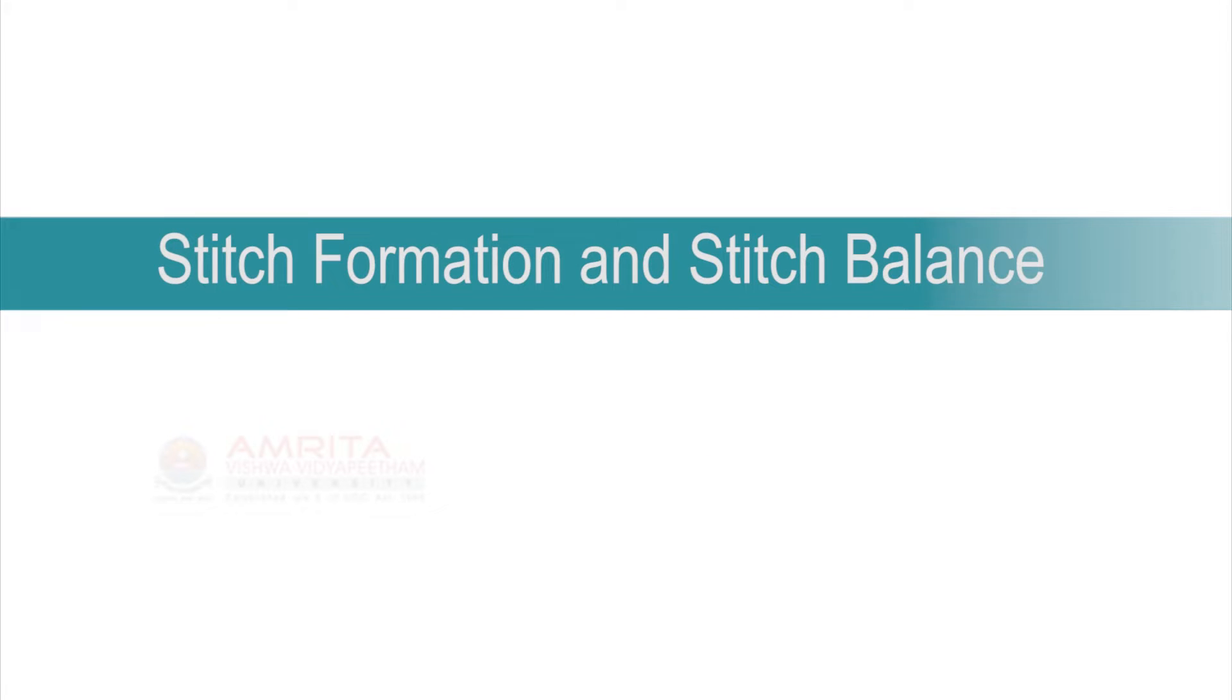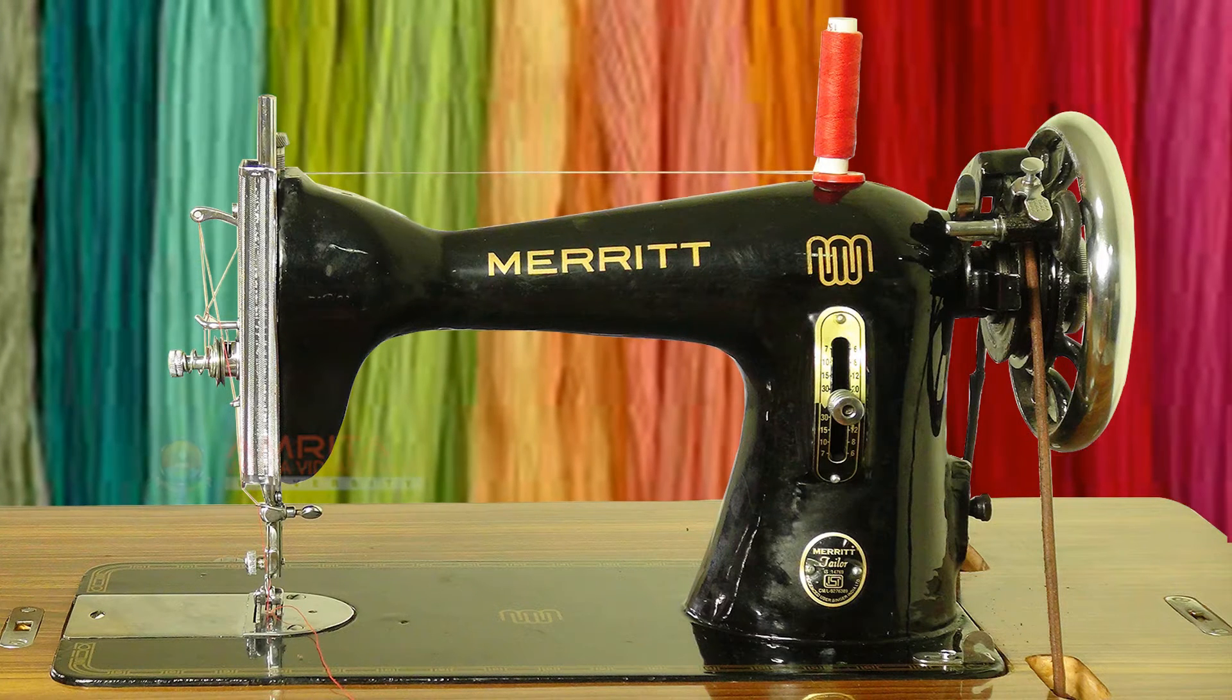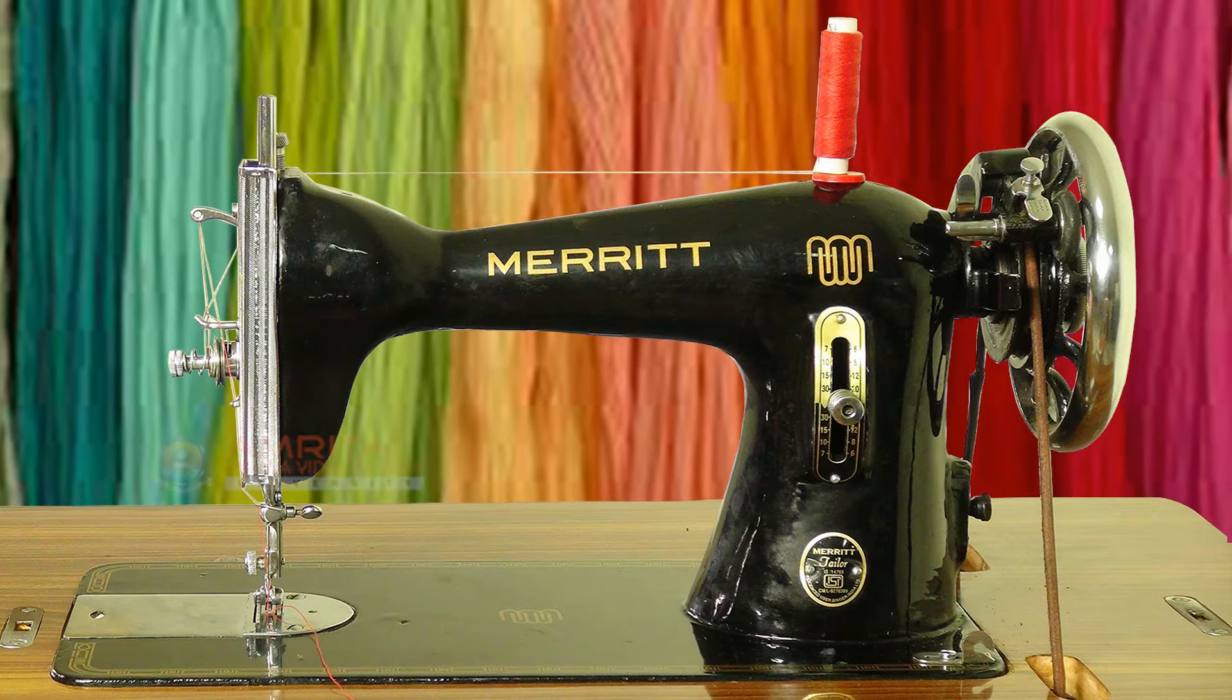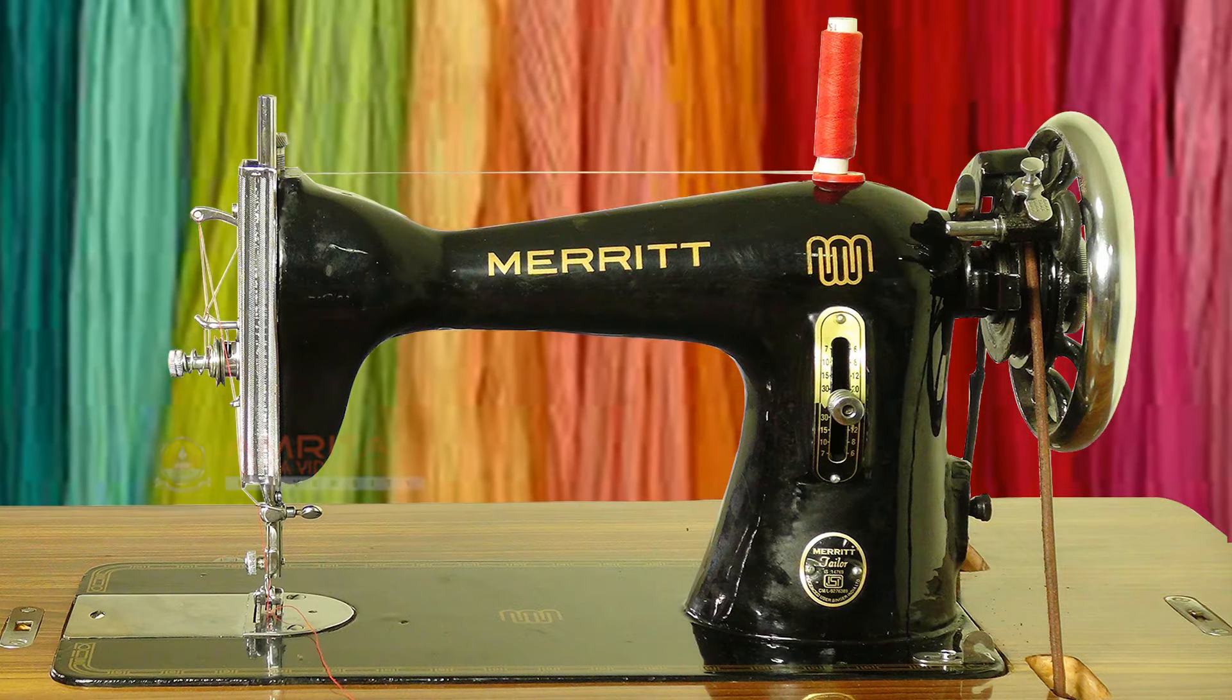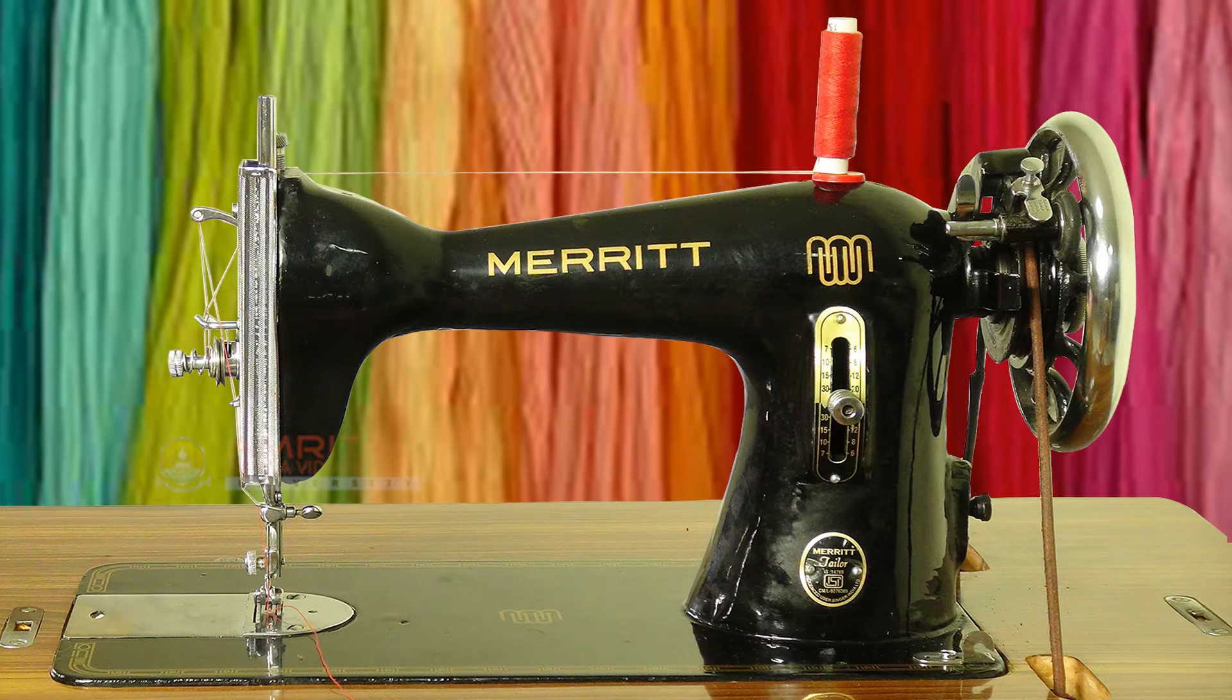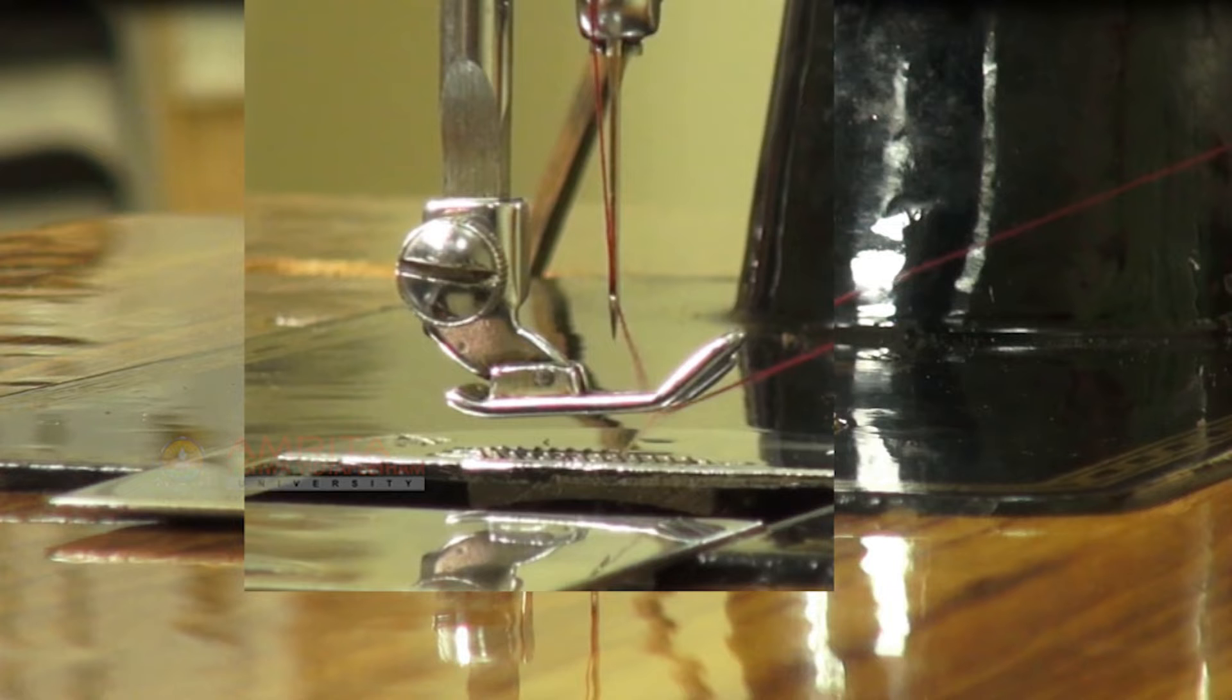Stitch Formation and Stitch Balance. You have learned about different parts of the sewing machine that are involved in the sewing operation. Although there are many parts, it is the needle and the threads which finally do the stitching.